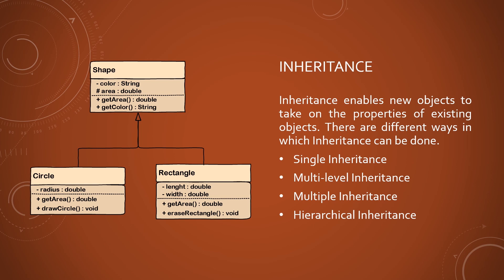Inheritance is a mechanism that allows hierarchically classifying a set of classes. Its main objective is to reduce code, since it allows designing new classes derived from previously designed ones, so that all elements defined in the base class are automatically passed on to subclasses or derived classes without rewriting them.